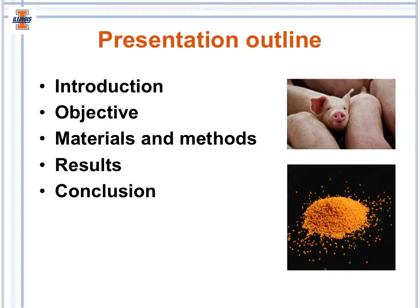The outline for this presentation is as follows. I'll first begin with an introduction on the digestibility of calcium in feed ingredients and the use of microbial phytase in feed ingredients of animal origin. I will then state the objective of the experiment, provide the materials and methods, state the results for the digestibility of calcium and phosphorus, and the effect of adding microbial phytase. I will then leave you with some conclusions and take-home messages.